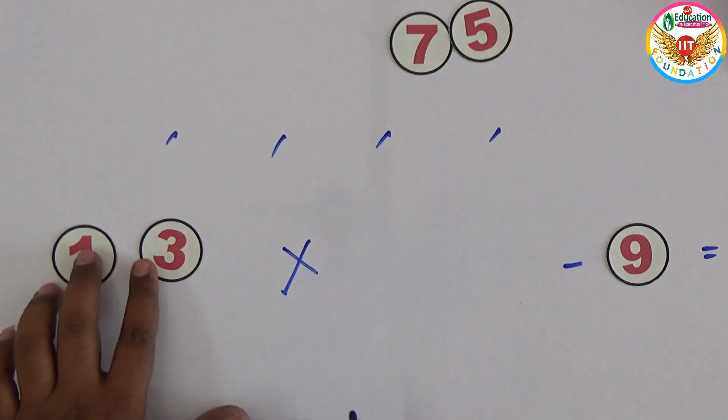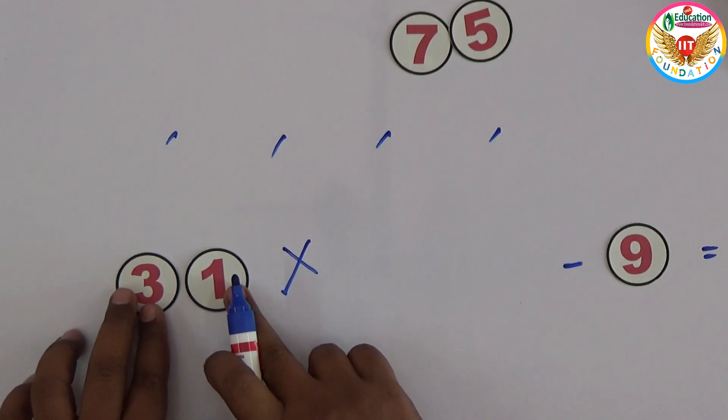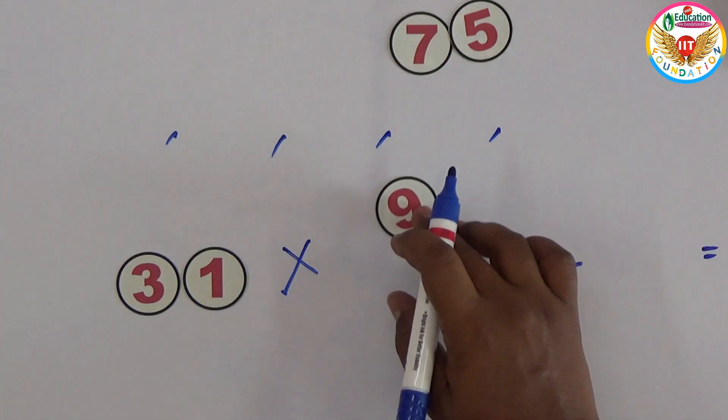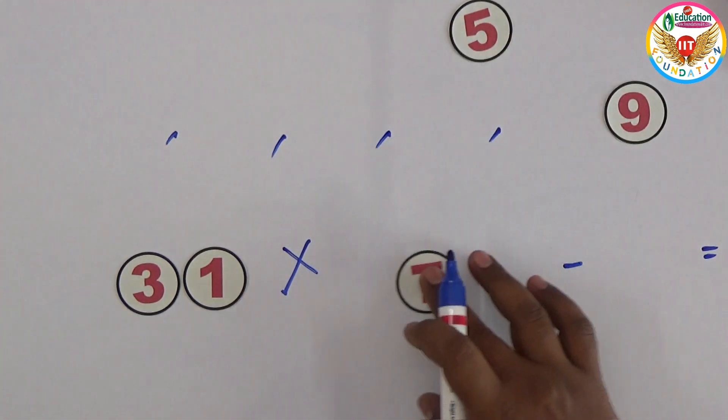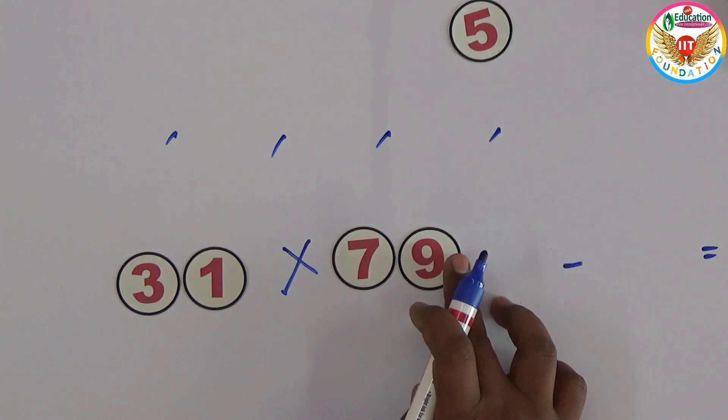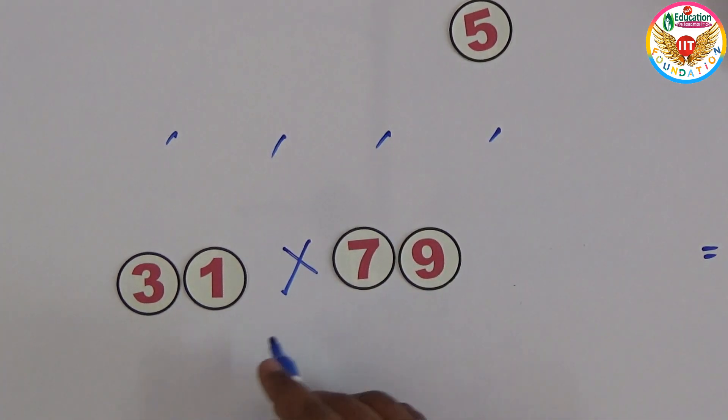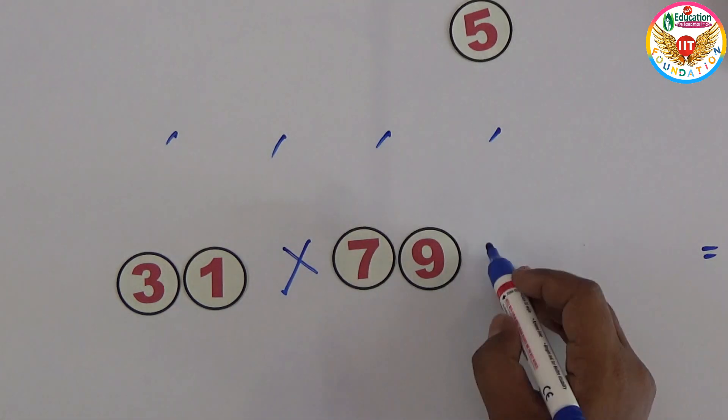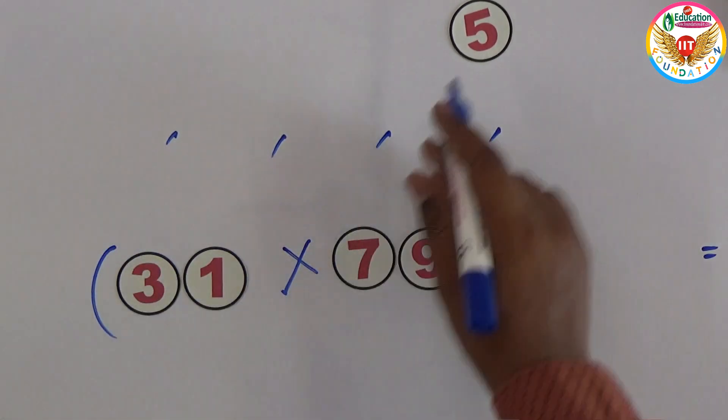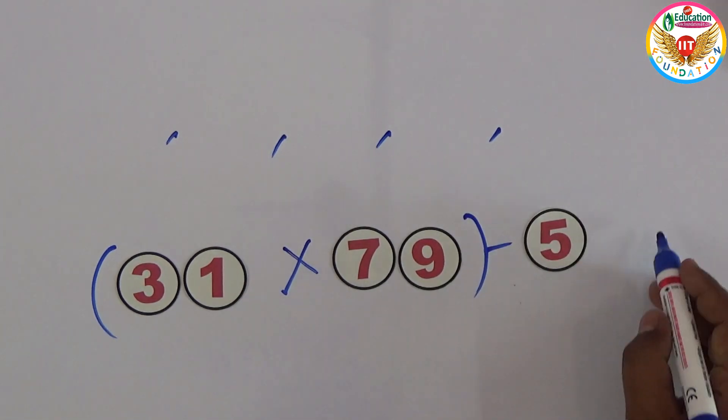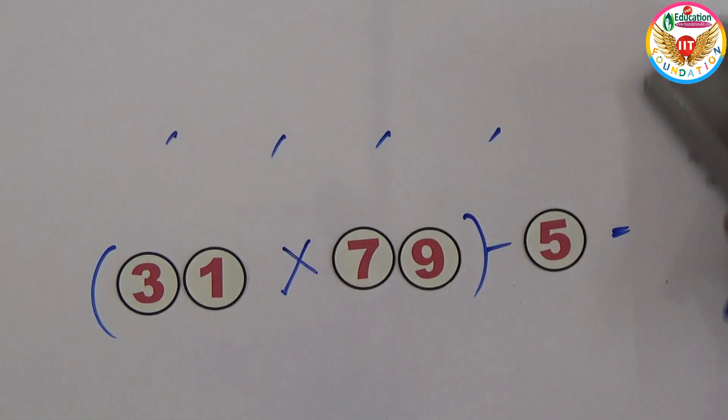We'll take 31 as a number and 79. So 31 times 79, and from this if I subtract the number 5, now this answer is exactly equals to 2444.